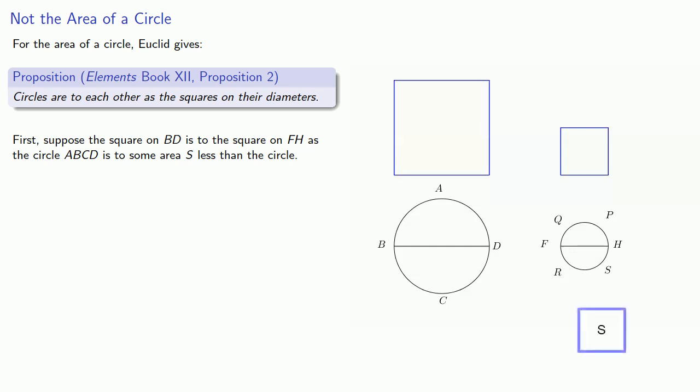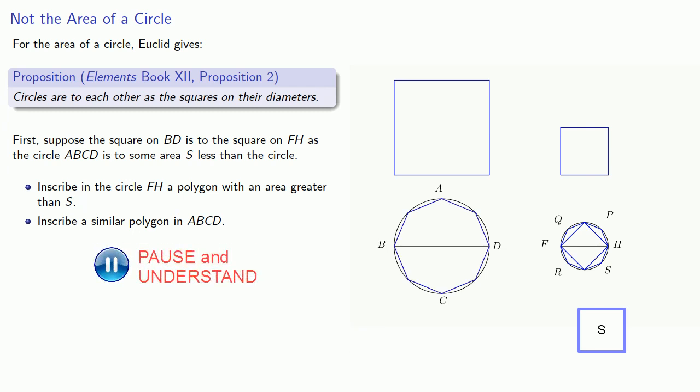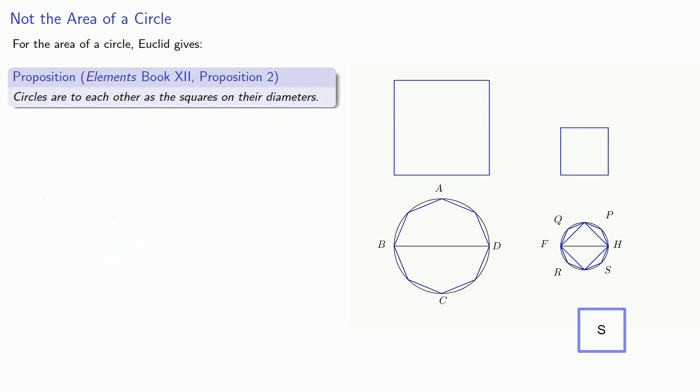We can inscribe in Circle FH a polygon with area greater than S, so inscribe a similar polygon in our other circle. Now by our assumption, the square on BD is to the square on FH, as the circle is to some area smaller than the circle.